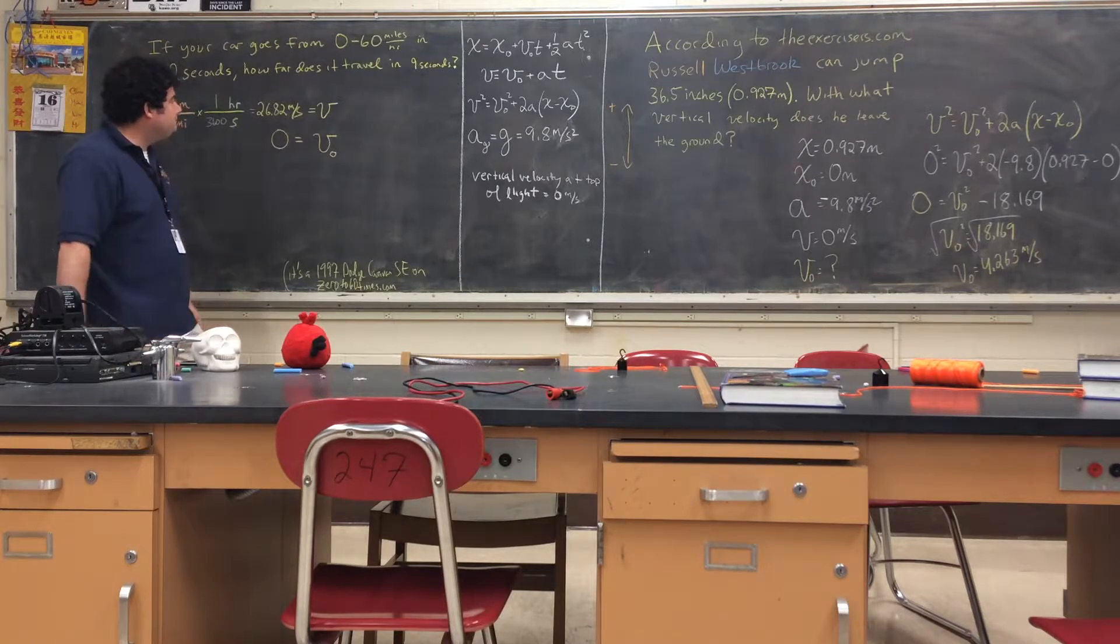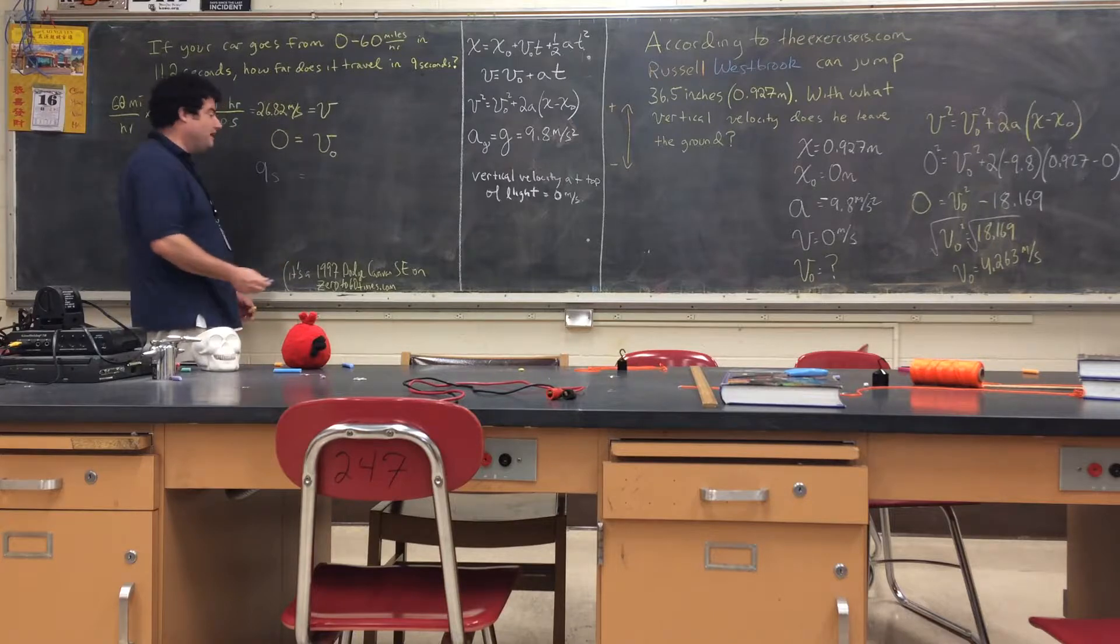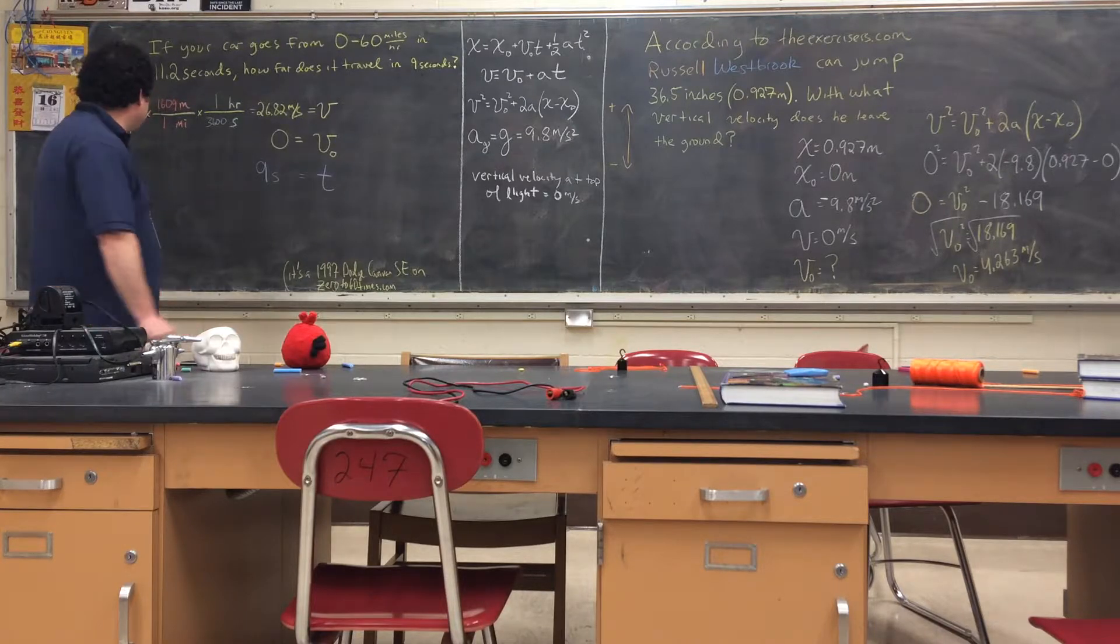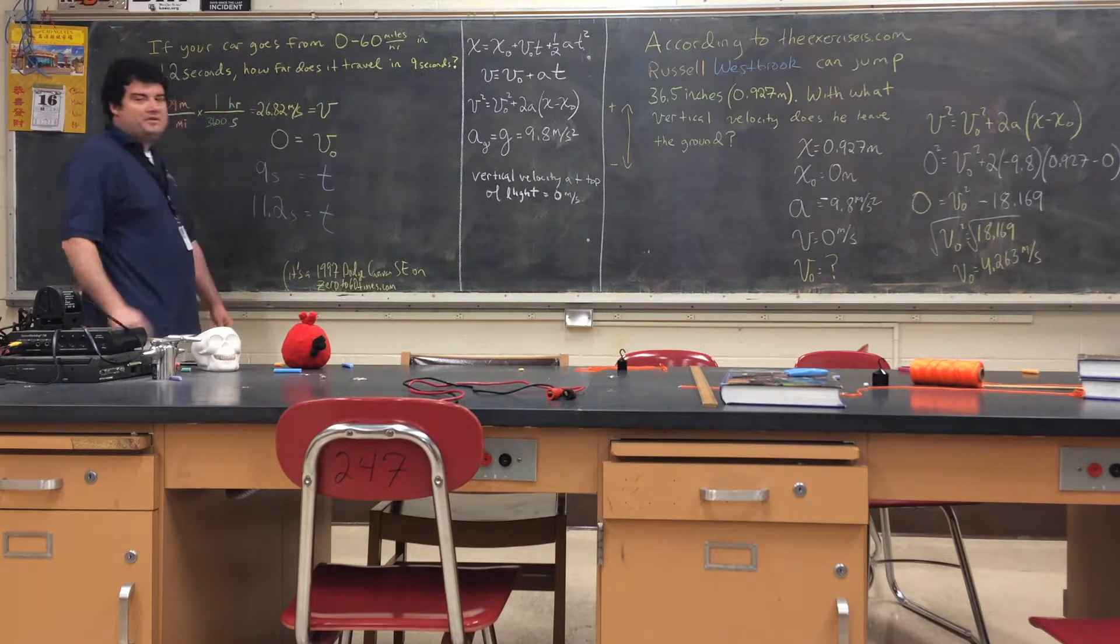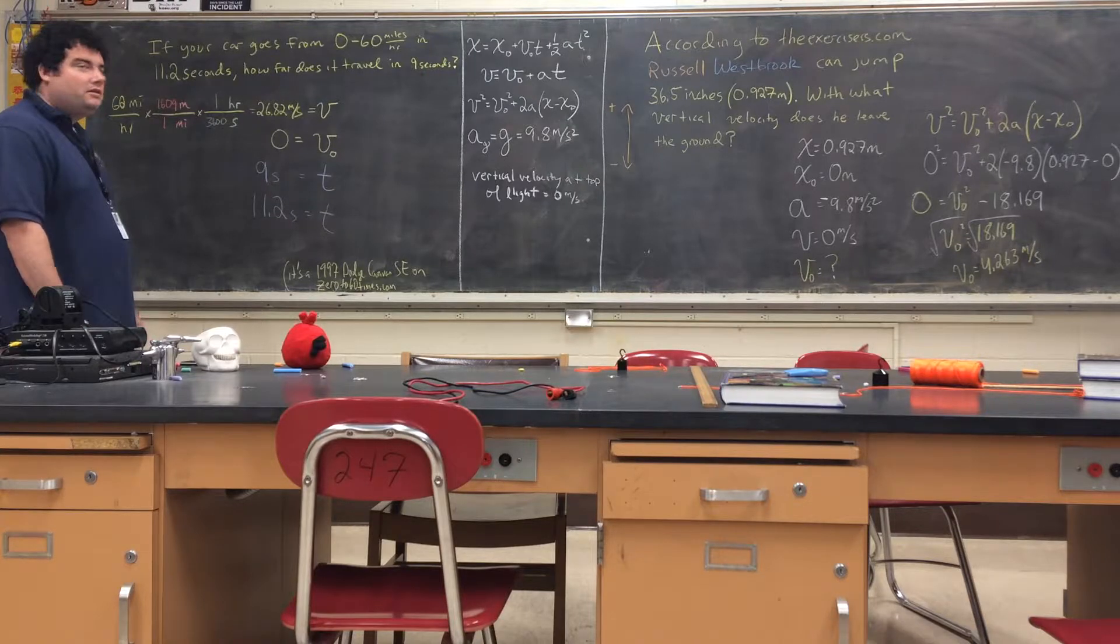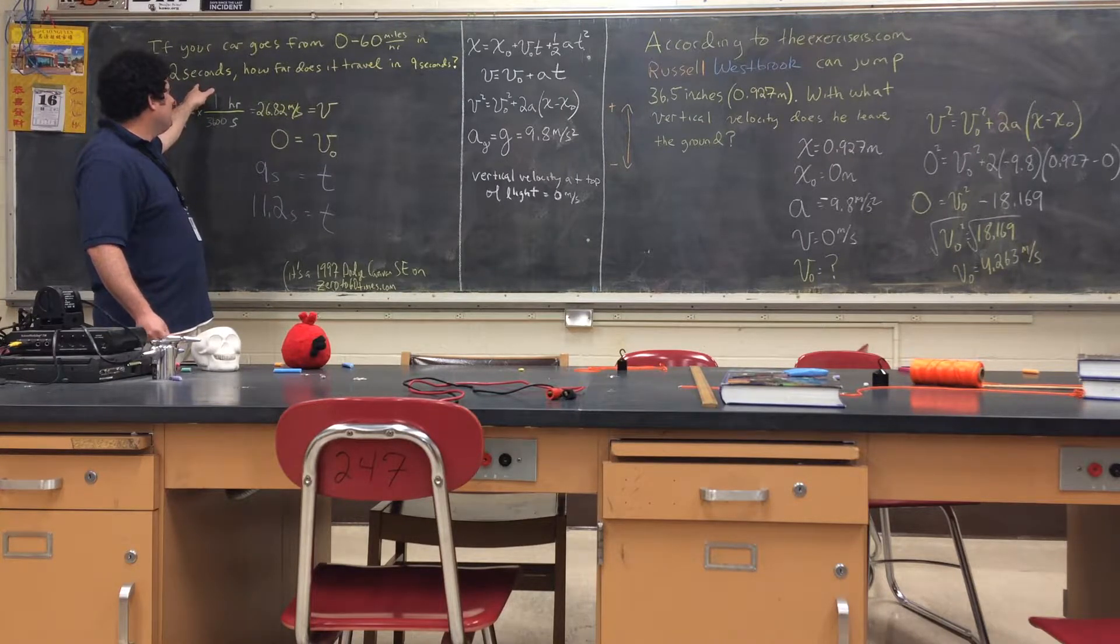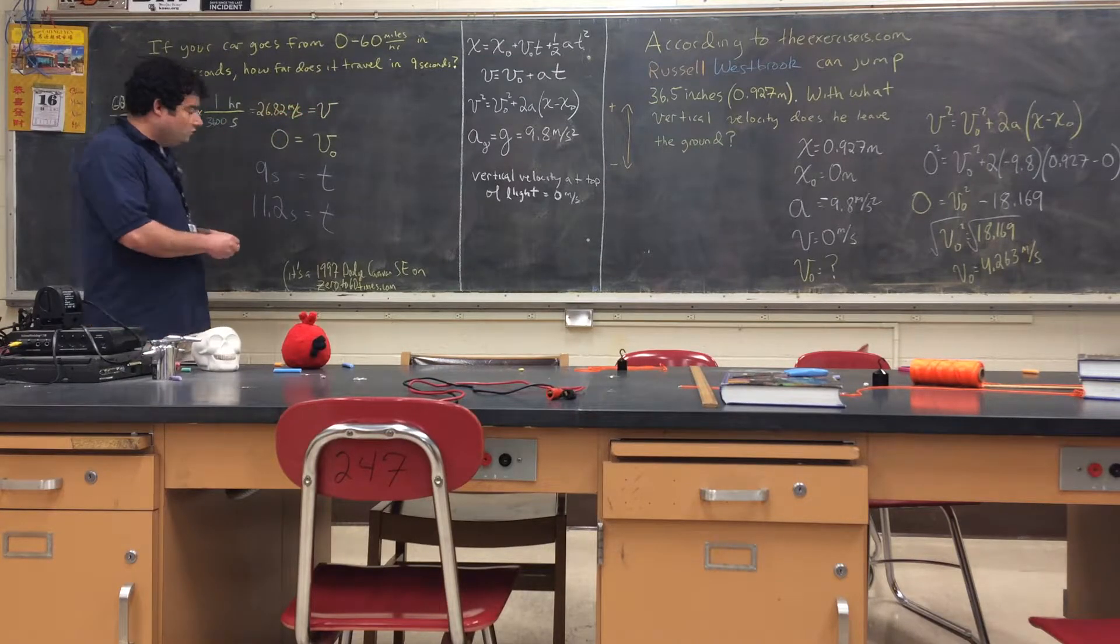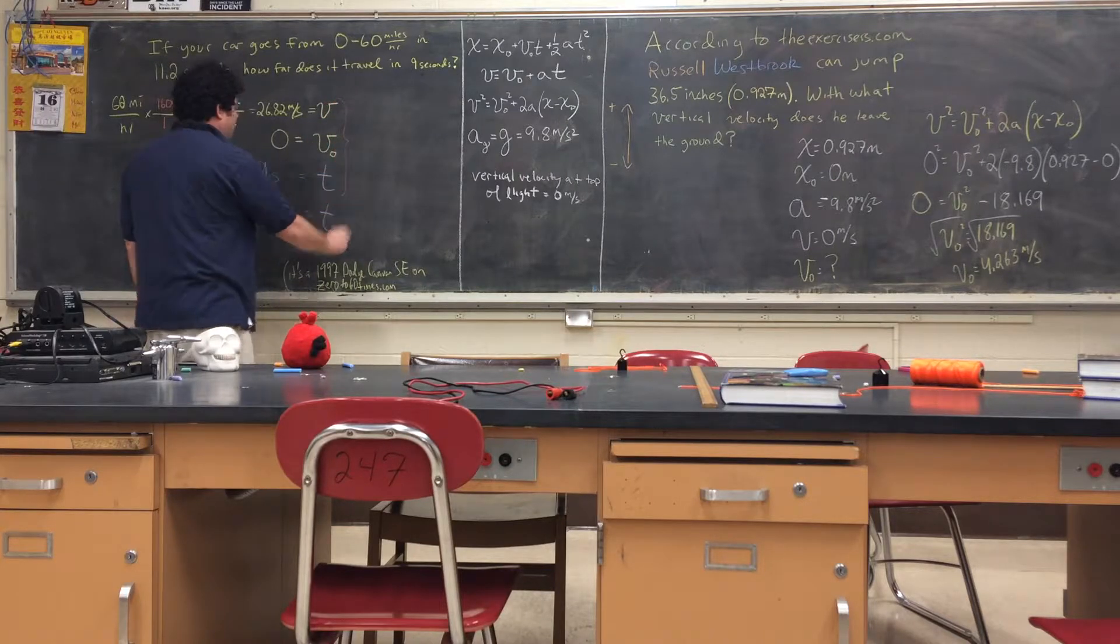Do we know anything else? Well, it tells us nine seconds, so that unit makes us think that must be time. And it also says 11.2 seconds, so that must be time as well. So when do we use the different times? Well, we know that the car is going from zero to 60 in 11.2 seconds. So this nine seconds must be something else that we're going to deal with later.